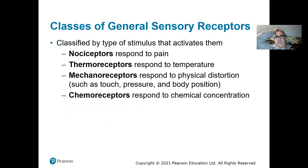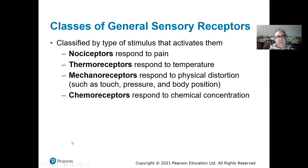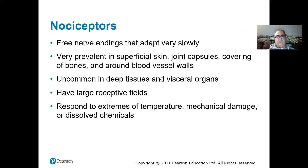This chapter starts off with general sense receptors. There are different classes. Remember, these receptors are just modified neurons with dendrites modified to pick up a specific sensation. We have nociceptors, which respond to pain. We have thermoreceptors — thermo tells you it responds to temperature. Mechanoreceptors respond to something moving, so those sense things like touch, pressure, and body position. And chemoreceptors — chemo tells you it responds to chemicals.